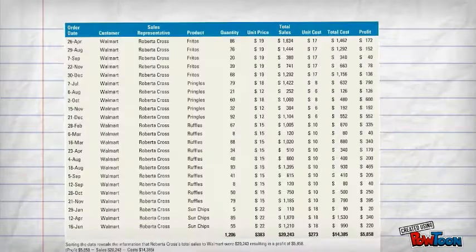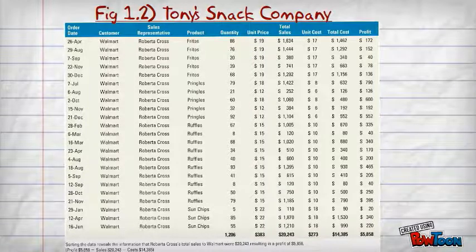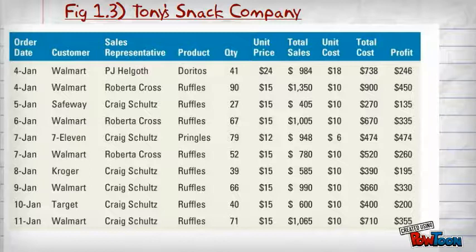If we look at figure 1.2 and 1.3, we start to discover something. We can begin to answer questions like: who is Tony's best customer by sales? Who is his least valuable customer? What is the best and least selling product by sales or maybe by profit? How much in dollars did the best sales rep bring in?